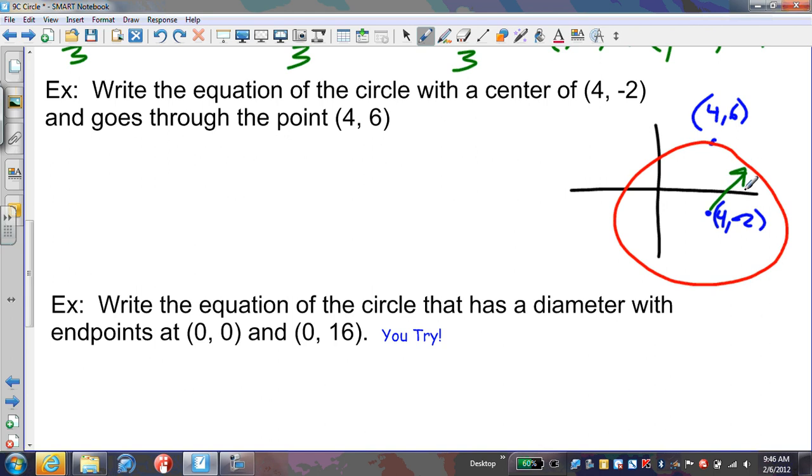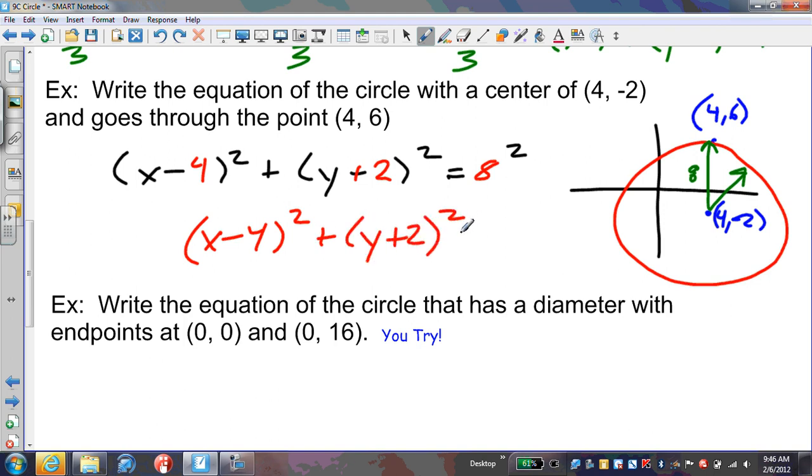We need to determine the radius. Looking straight up, we went from -2 to 6, so we have a radius of 8. Now we write the standard equation: (x - h)² + (y - k)² = r². Filling in the data: h = 4, k = -2 (change to positive in the formula), and r = 8. Our final equation is (x - 4)² + (y + 2)² = 64.